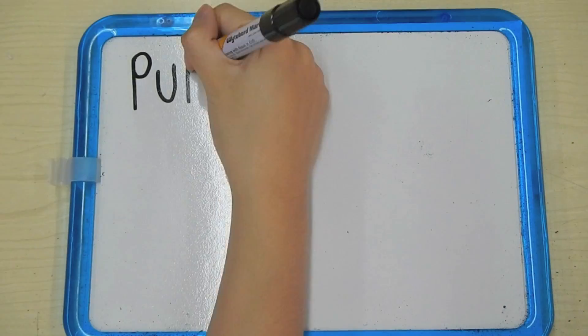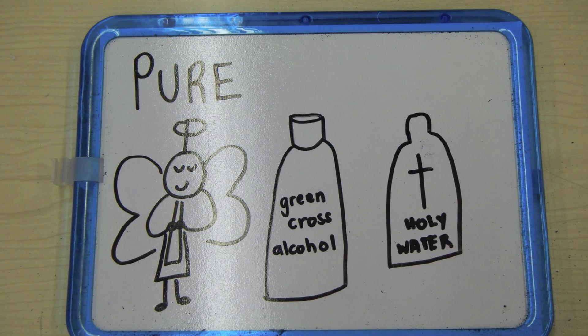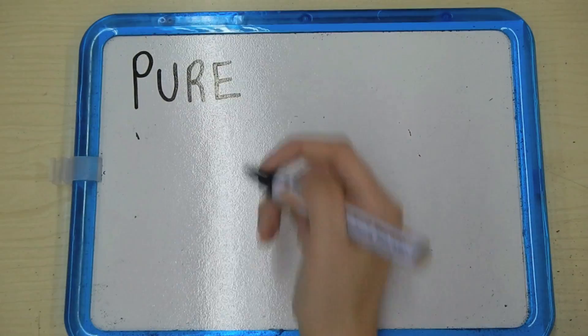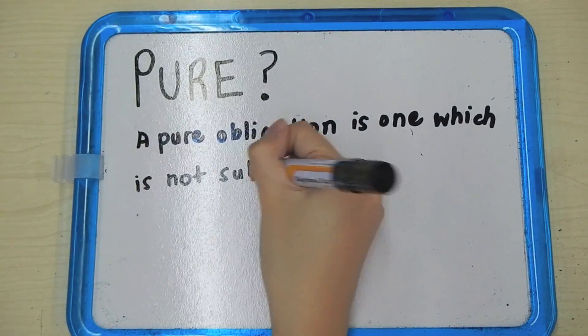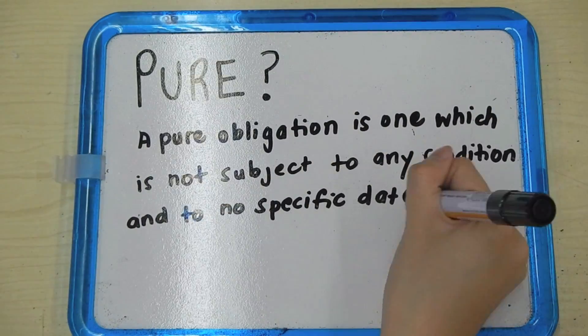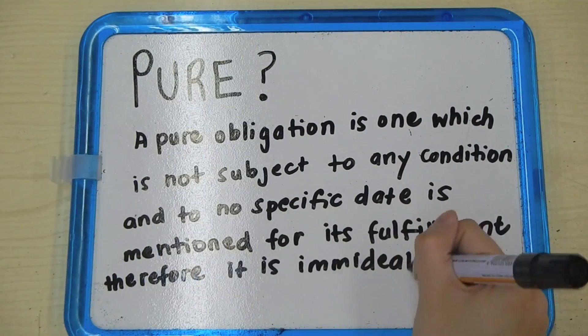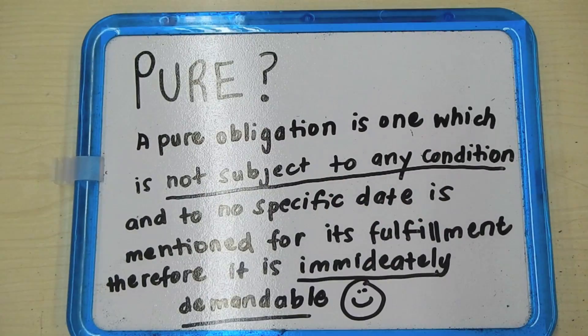The other kind of obligation is pure. It's not what you're thinking. So, what is a pure obligation? A pure obligation is one which is not subject to any condition, and no specific date is mentioned for its fulfillment. Therefore, it is immediately demandable.